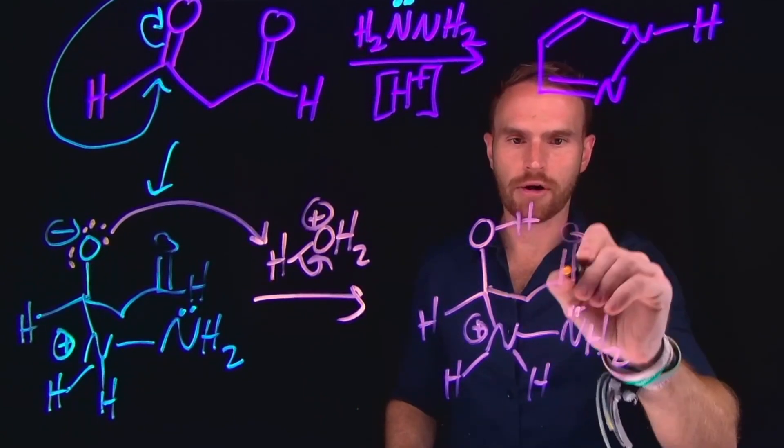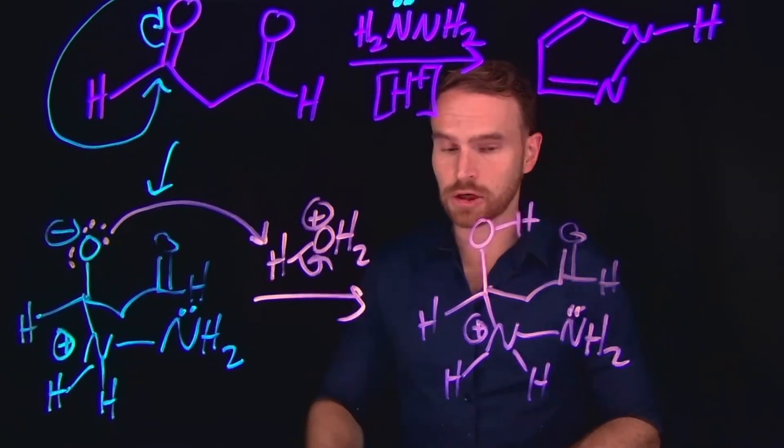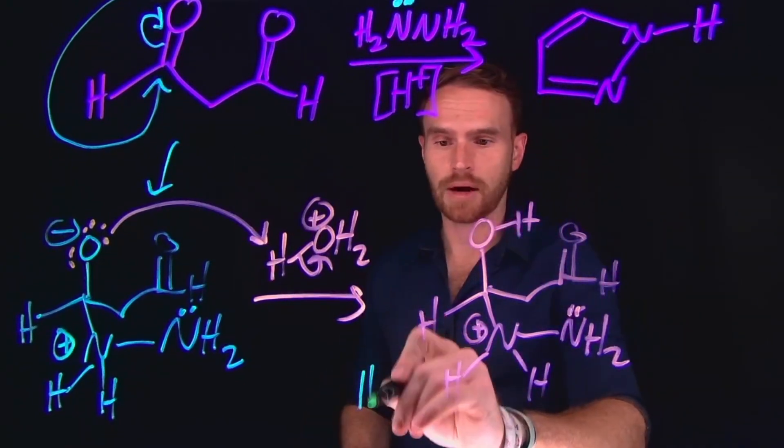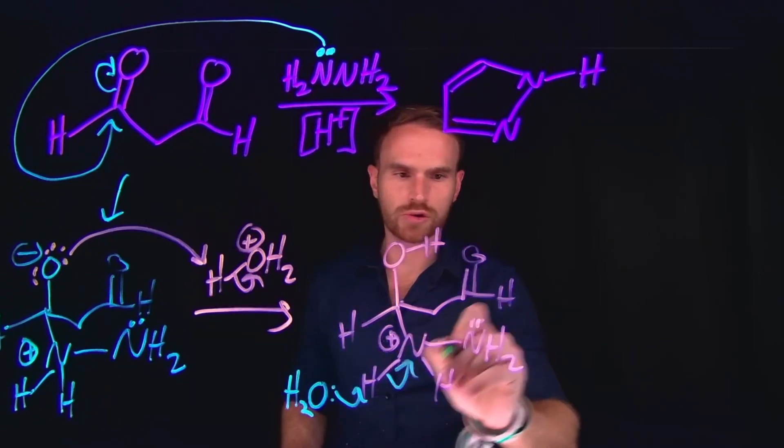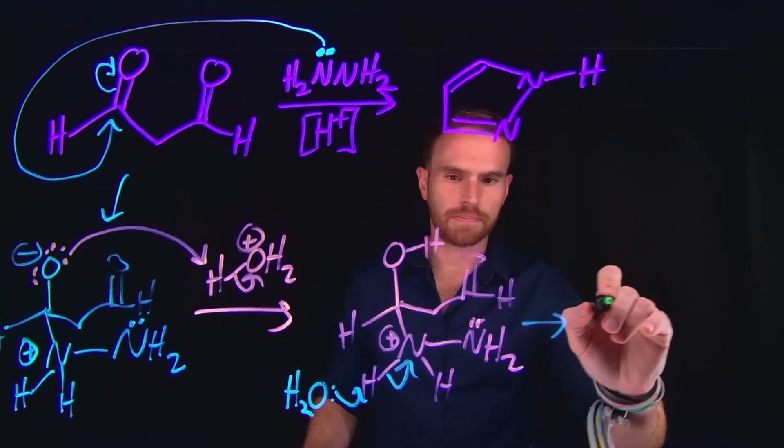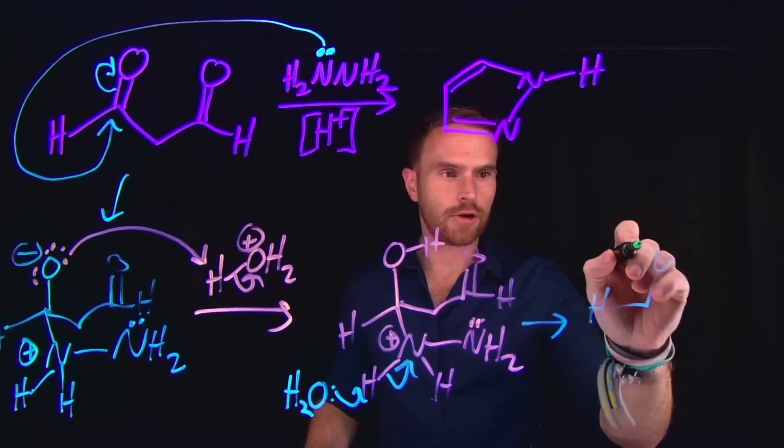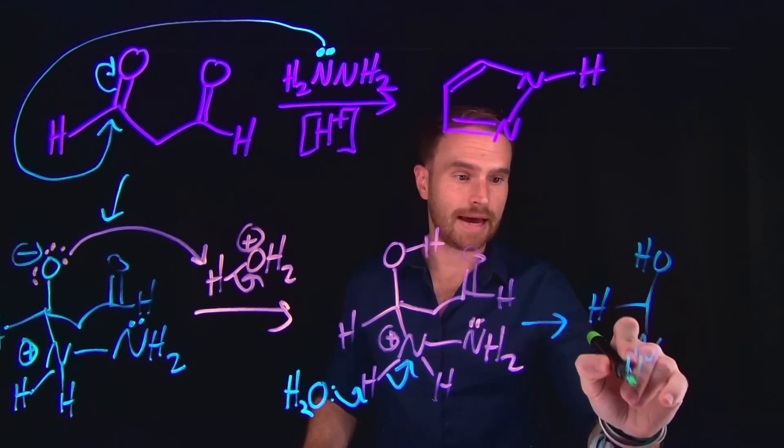which will subsequently be deprotonated by the water molecule or the conjugate base that we formed at this position. So now we have our intermediate, which can then subsequently again be deprotonated by water in order to generate our neutral species, which is going to be an intermediate that is now neutral.